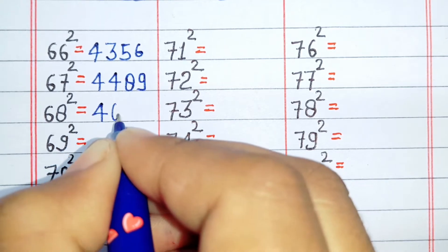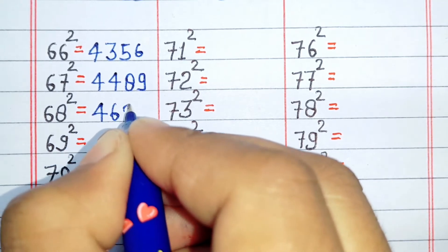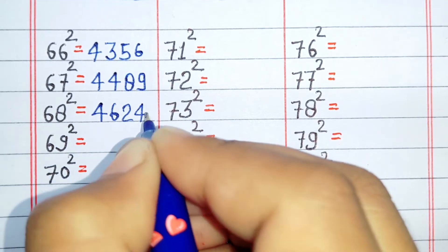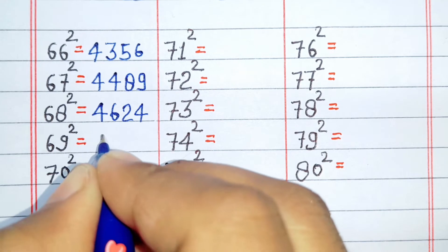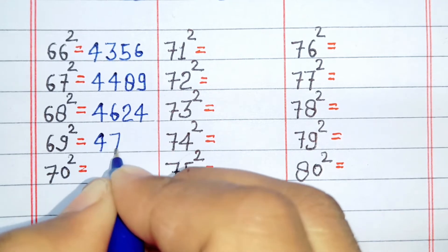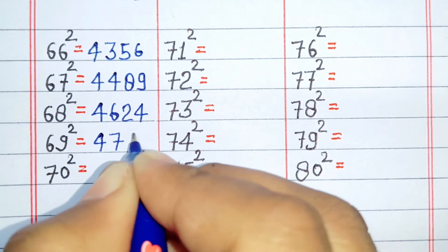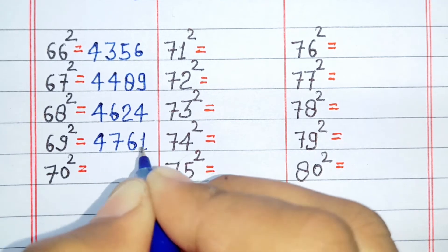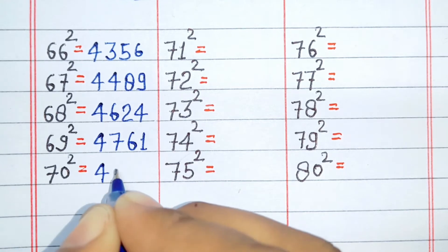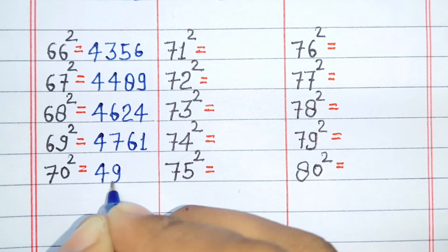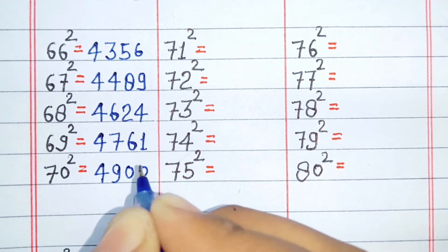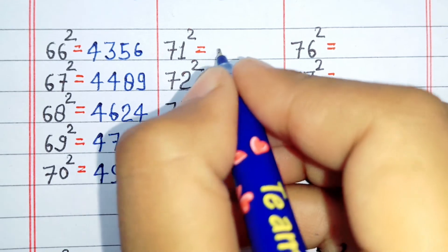Square of 68 is 4625. Square of 69 is 4761. Square of 70 is 4900.